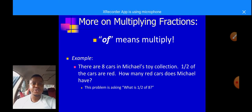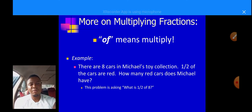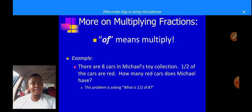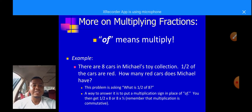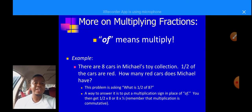There are eight cars in Michael's toy collection; half of the cars are red. How many red cars does Michael have? We can summarize this question as: what is half of eight? Now, 'half of eight' means you put a multiplication sign in place of 'of.' That means you change 'of' to a multiplication sign — which we regularly call 'times.' So you get one half times eight, or eight times one half.